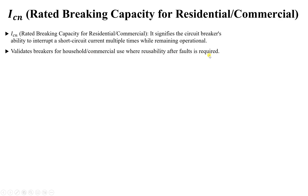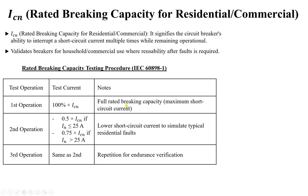ICN is used for household and commercial applications where reusability after faults is required. For example, if a short circuit happens in my house, I need my circuit breaker to be operable again afterwards. The testing standard for this is IEC 60898-1, which covers household and commercial applications. If ICN is 40 kilo-ampere, the testing proceeds as follows.